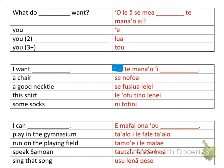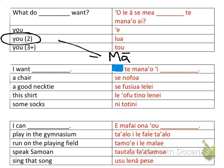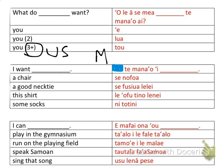If responding for multiple people, take out 'o.' For dual — us two — use 'ma': 'ma te mana'o ai se nofoa' means 'we two want a chair.' For three or more people, use 'mato': 'mato te mana'o ai se nofoa' — that's three or more people wanting a chair.